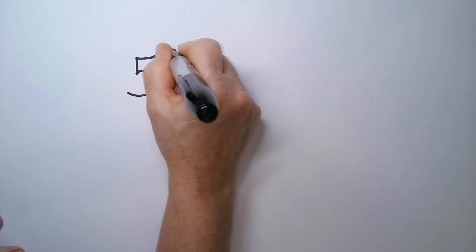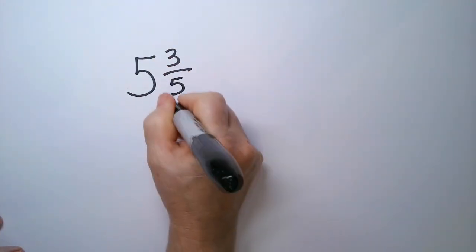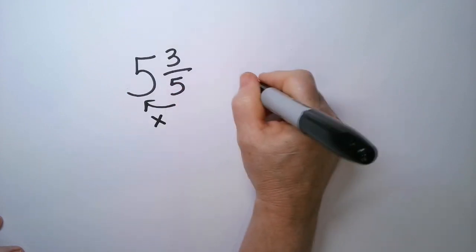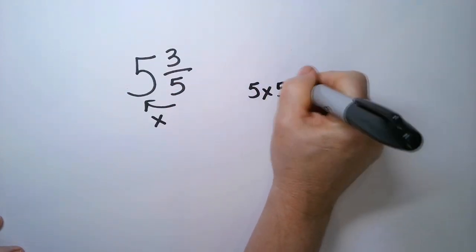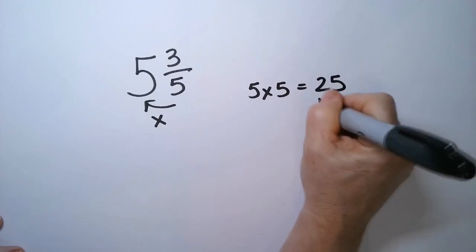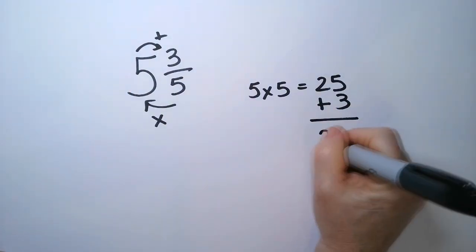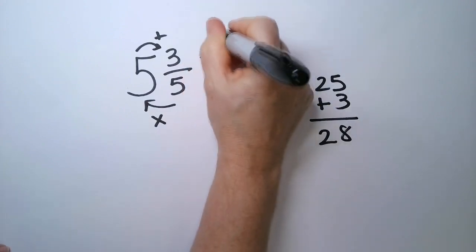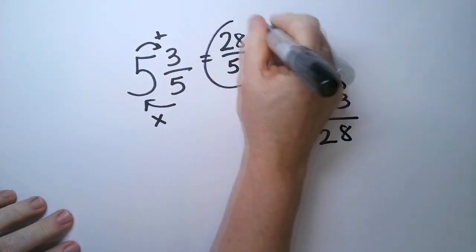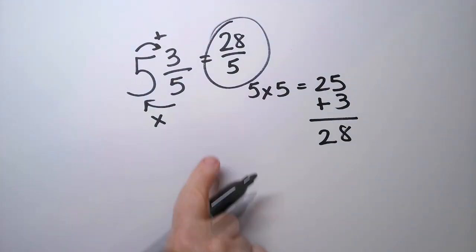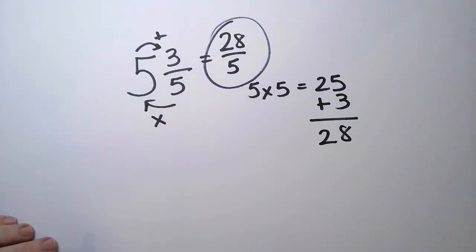5 and 3 fifths. 5 times 5 is 25 plus 3 is 28. So, this becomes 28 and the denominator always stays the same. Okay? We don't change the number of divisions. Okay? Good.